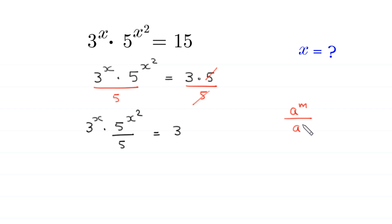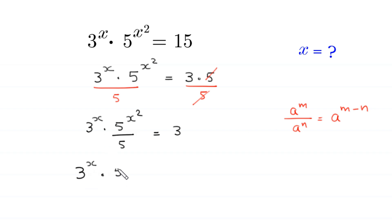Now by using the power rule — a to the power m divided by a to the power n is equal to a to the power m minus n — this will become 3 to the power x times 5 to the power x squared minus 1, since this 5 has power 1 here, is equal to 3.